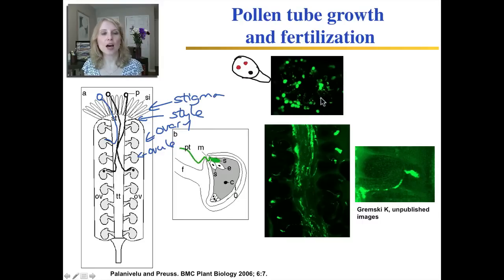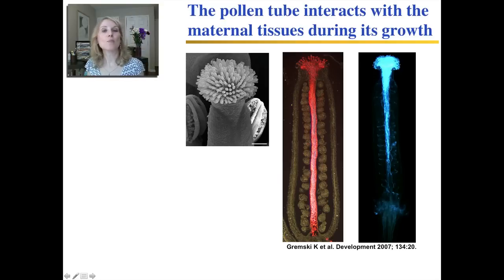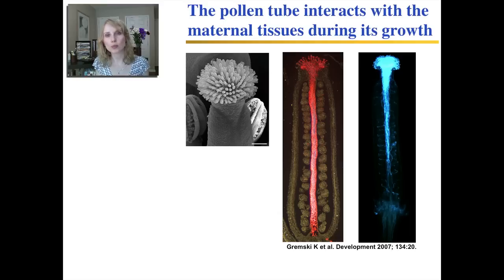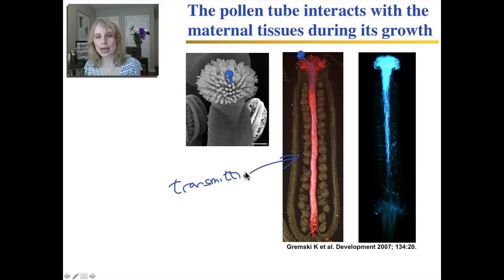Here are pictures of pollen tubes growing — with pollen genetically engineered to be fluorescent. Hundreds of pollen tubes are growing through the ovary and delivering the sperm to the ovules. The pollen tube has to interact with the maternal tissues for its growth — it actually penetrates and grows through those tissues. The red tissue the pollen grows through is called the transmitting tract, which allows the pollen tubes to pass through it.